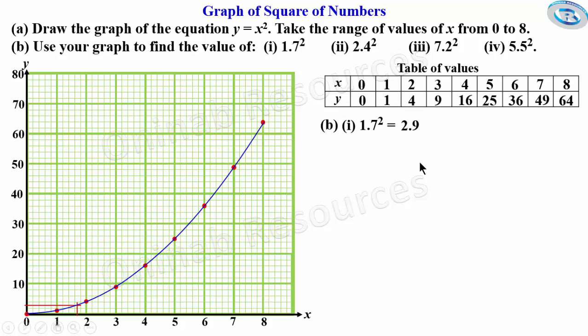We go to the second one, which is 2.4². Here, x is 2.4. This is 2.2, 2.4. We draw the line, then draw another line to the y-axis. This is very close to 6—this is 2, 4, 6—very close to 6, so we estimate it as 5.9.